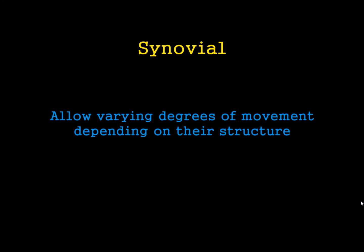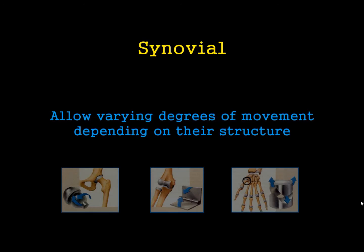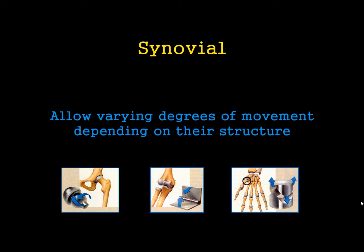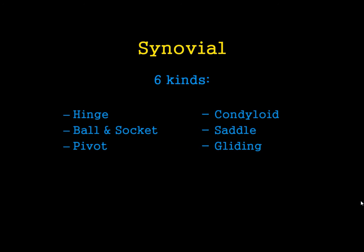And lastly, we have synovial joints — this is the third type. There is quite a bit of movement allowed in these, certainly more than the other two types, but there is a varying degree of movement depending on the structure. You might recognize some of the joints labelled here. Synovial joints can be broken down into six further subcategories. Synovial joints are the freely movable ones, but they can be sub-divided into another six types of joints.